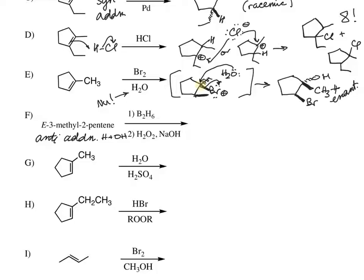At carbon-3 we have a methyl group. To check the E stereochemistry, we look at the two groups on each carbon: on the first carbon it's a hydrogen and a methyl (methyl is higher priority); on the second carbon it's a methyl and an ethyl (ethyl is higher priority). Because the highest priority groups are on opposite sides — trans to each other — this is in fact the E stereochemistry.